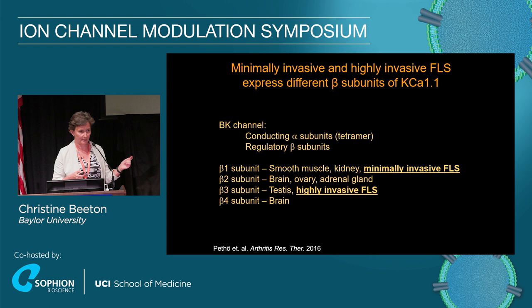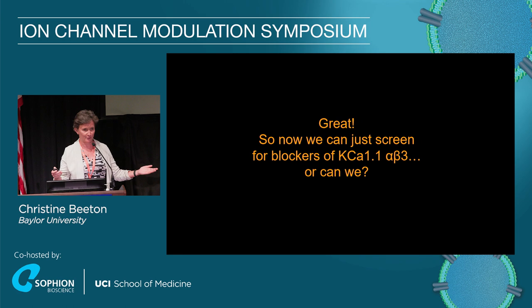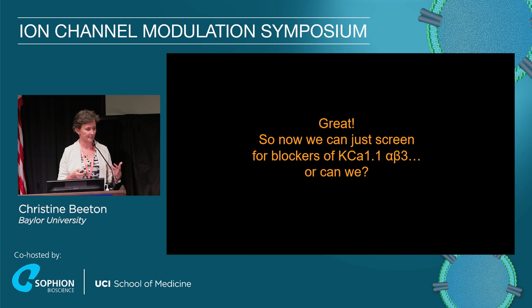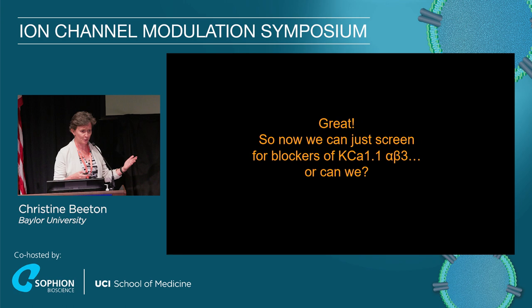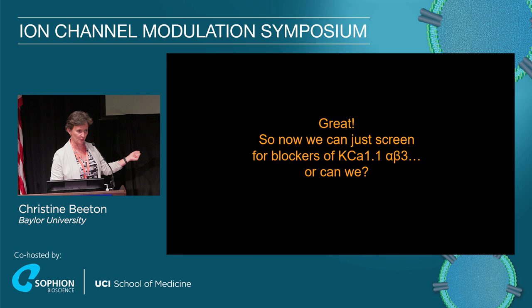So we said, let's co-express alpha and beta-3b and start screening. We got the construct for beta-3b and already had cells expressing full-length alpha. We tried to co-express and nothing happened — beta-3b wouldn't co-express. I talked with Frank Horrigan, who works on this channel; he tried and couldn't co-express it either. Then I called Chris Lingle, who discovered the subunits; he said I was probably doing something wrong, tried it himself, and it didn't work. That kind of killed the idea, and we sat on it for a while.